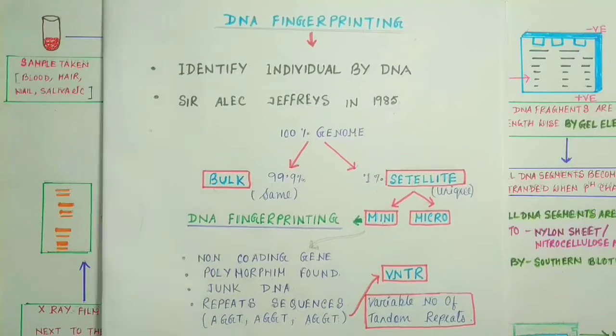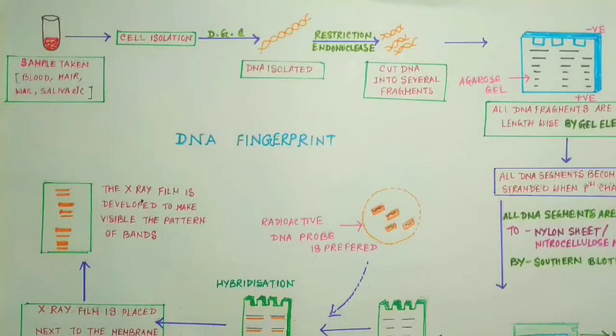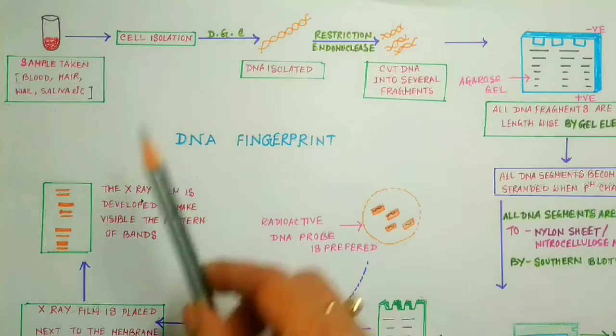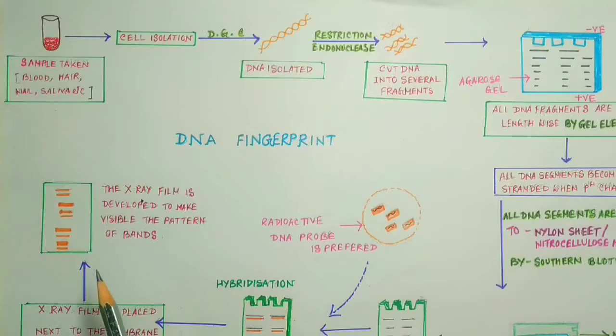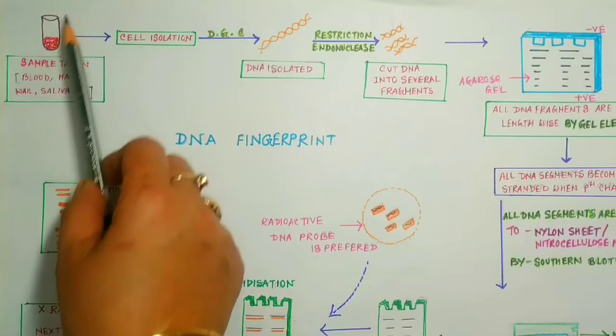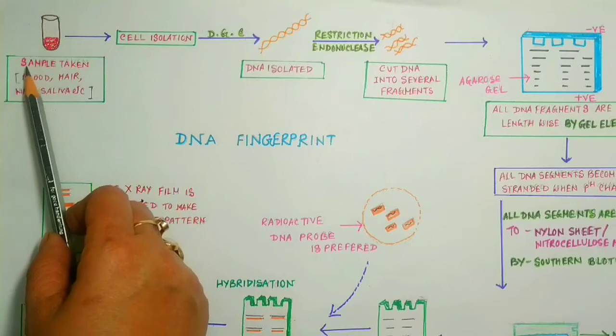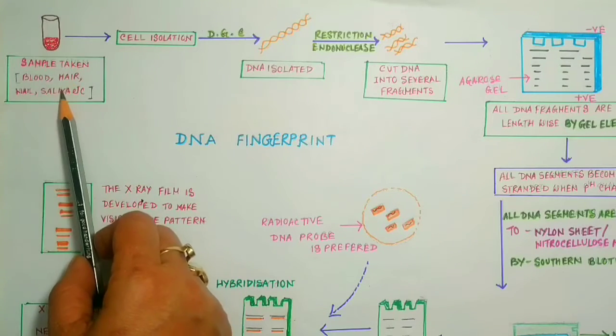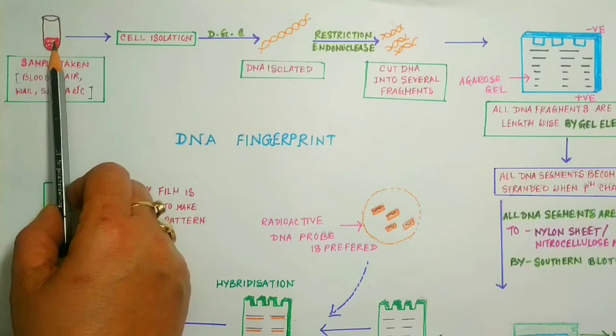Now come to the steps of DNA fingerprint process. For that process, you have to go through this diagram. First, the sample is taken. For DNA fingerprint, samples should be blood, hair, nail, saliva, etc. So first, sample is taken.